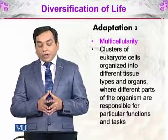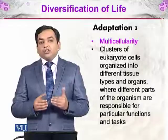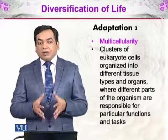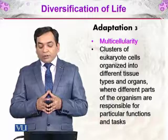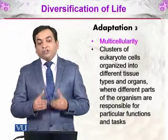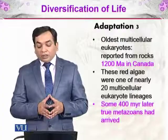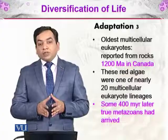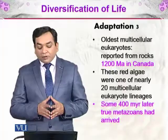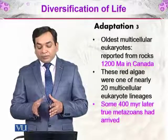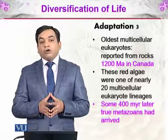The third adaptation is multi-cellularity — many cells in a single organism. Clusters of eukaryotic cells organized into different tissue types and organs, where different parts of the organism are responsible for particular functions and tasks. This led to much more advanced organisms on the surface of Earth. The oldest multicellular eukaryotes reported from rocks were 1,200 million years old in Canada, and these red algae were one of nearly 20 eukaryotic lineages. Some 400 million years later, the true metazoa arrived — the ancestors of modern-day animals.